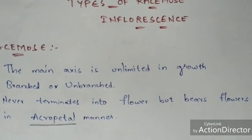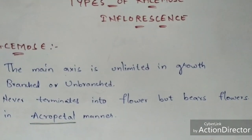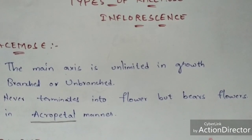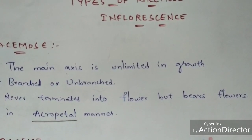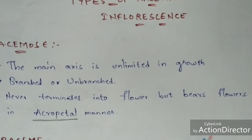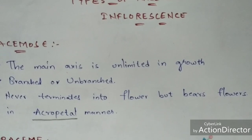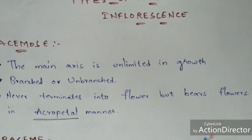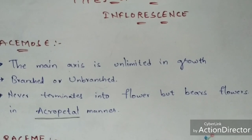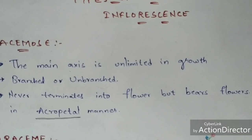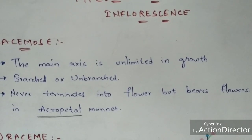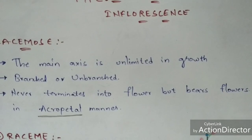These are the types of racemose inflorescence. There are three more types of inflorescence which I will explain in part two, as this video has become longer. Now I'm going to show you some pictures of examples of these types — raceme, spike, panicle, and others — so you can understand easily.